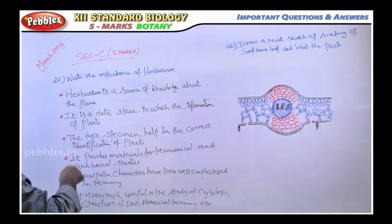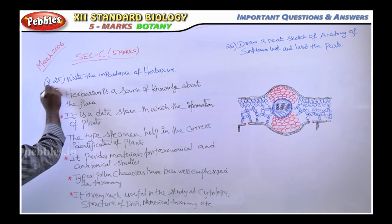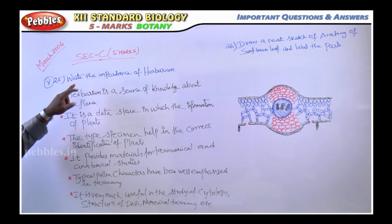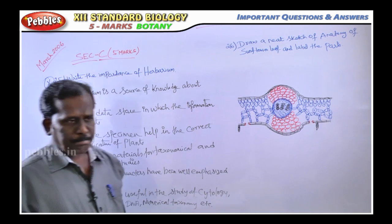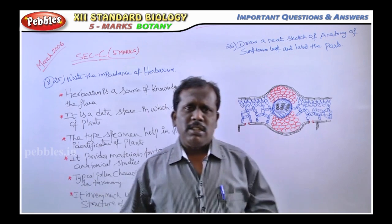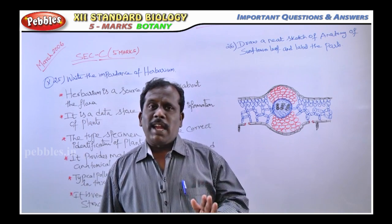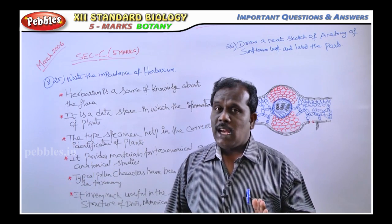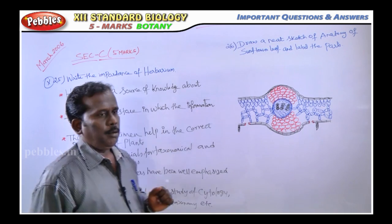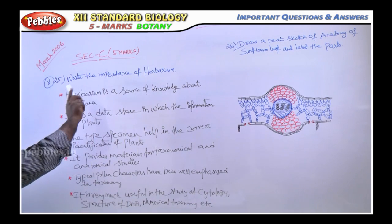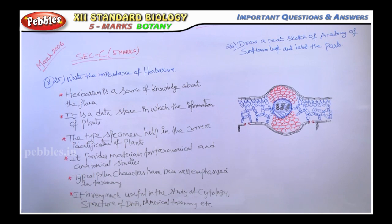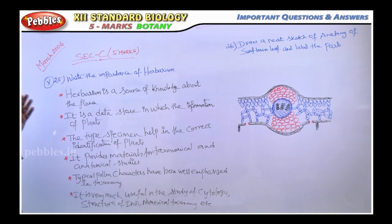The compulsory question is question number 25. What they are asking is: write the importance of herbarium. Sometimes they ask the same question as 'explain the significance of herbarium.' The same question — importance or significance of herbarium. So first we are going to discuss the importance or significance of herbarium.